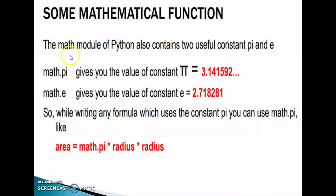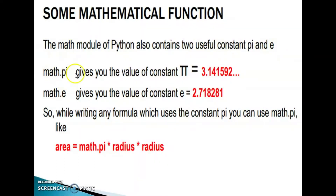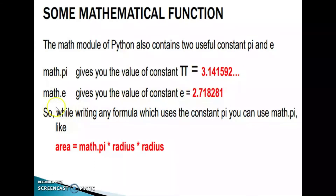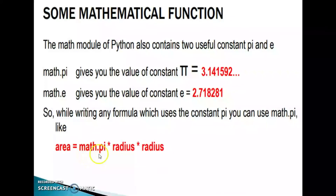The math module contains two useful constants: pi and e. math.pi gives the value of constant pi, 3.141592, etc. math.e gives the value of constant e, which is 2.718281. So while writing any formula that uses the constant pi, you can use math.pi — for example, area equals math.pi times radius times radius.